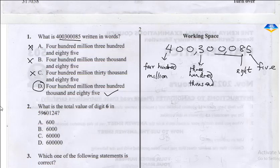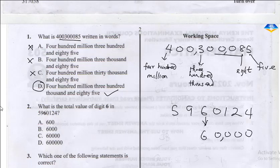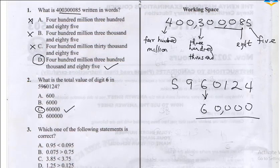The easiest way to solve this is to bring out the 6 and make the rest zeros. Putting in the comma, this gives us 60,000. So the correct answer here is C. As easy as that, you can keep solving these questions.